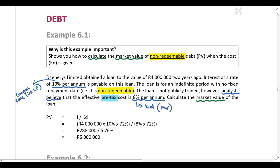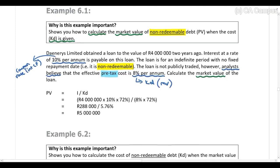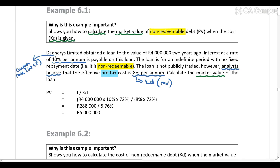Using the perpetuity formula, the market value equals the interest cash flow divided by the cost of debt. The nominal value is four million rand; the coupon rate of 10% gives an interest cash flow that is multiplied by 72% for the after-tax amount. This is then divided by the cost of debt of 8%, also multiplied by 72% to get the after-tax cost of debt. This gives a market value of five million rand.